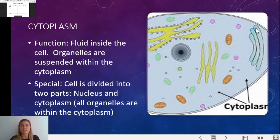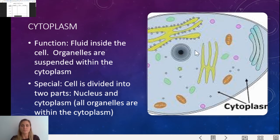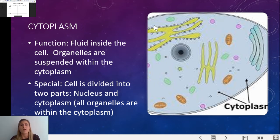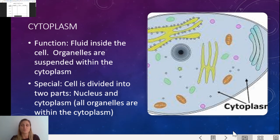The next part of the cell is the cytoplasm. It's basically like jelly that's inside of the cell membrane. It's the jelly-like fluid that suspends the organelles. The cytoplasm is divided into two parts: the nucleus, generally in the center of the cell, and then all of the other organelles suspended inside that jello. Think of a grandma's jiggly jello mold with fruit inside — the cytoplasm is like that jello and the organelles are suspended inside like those pieces of fruit.